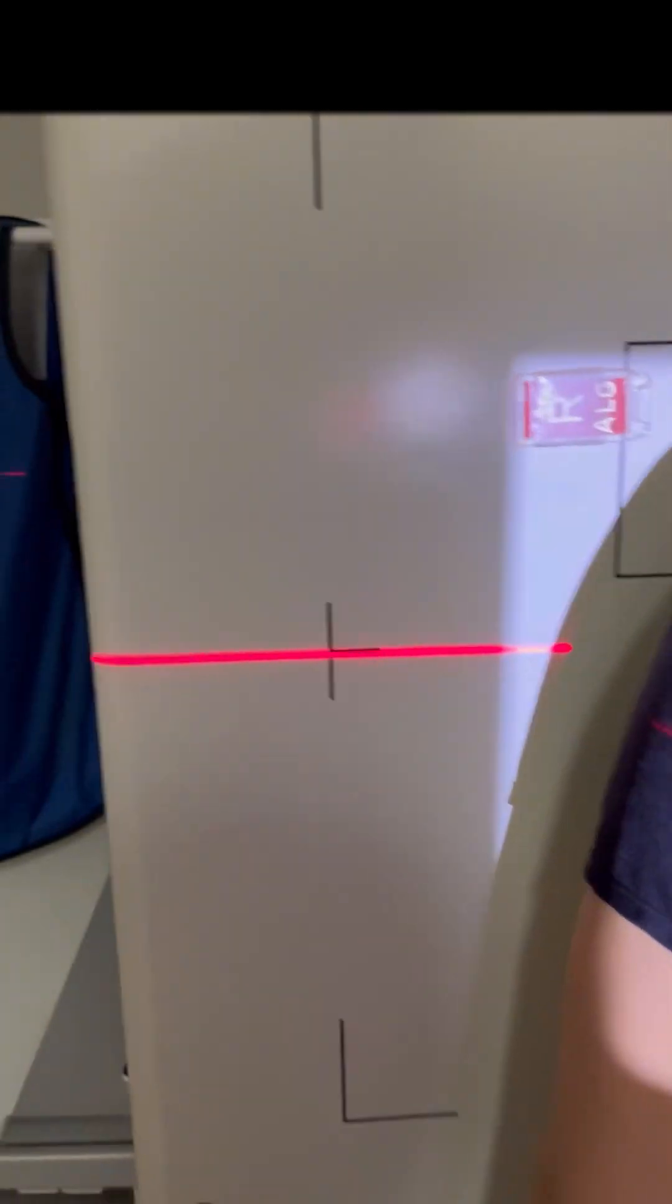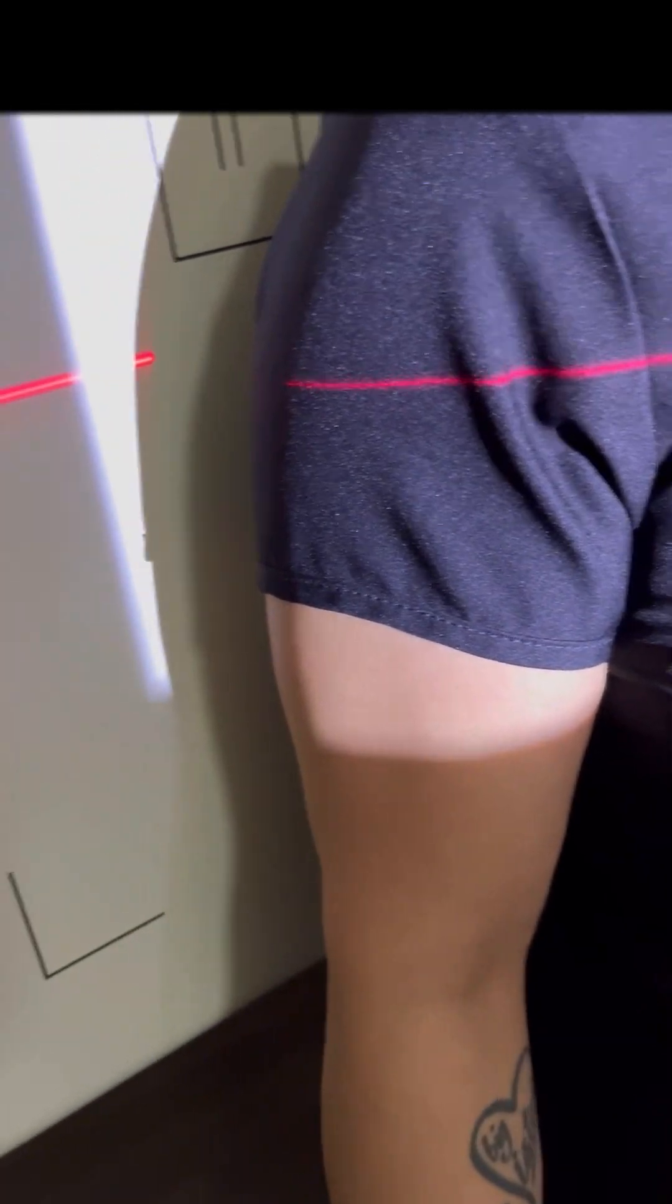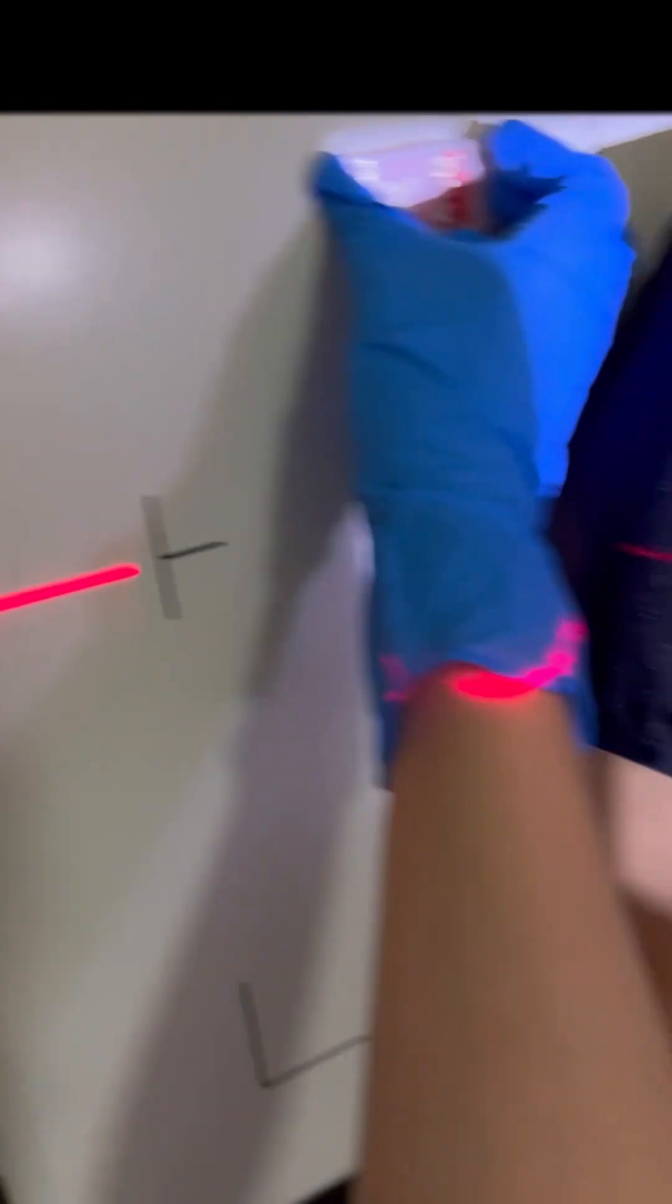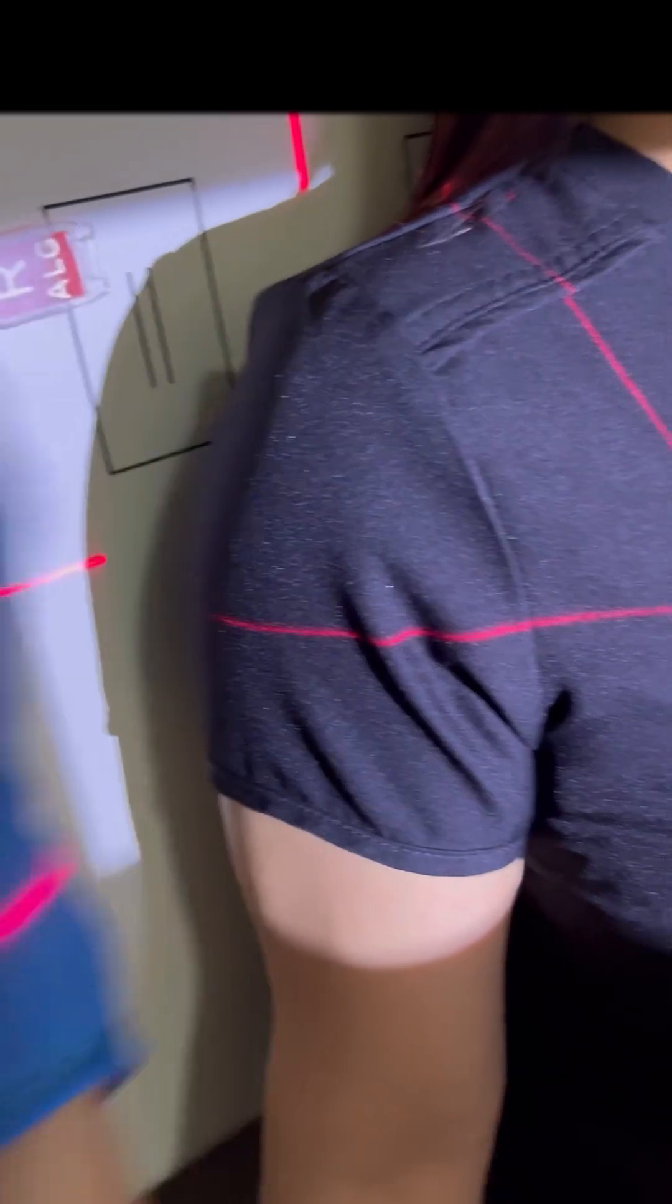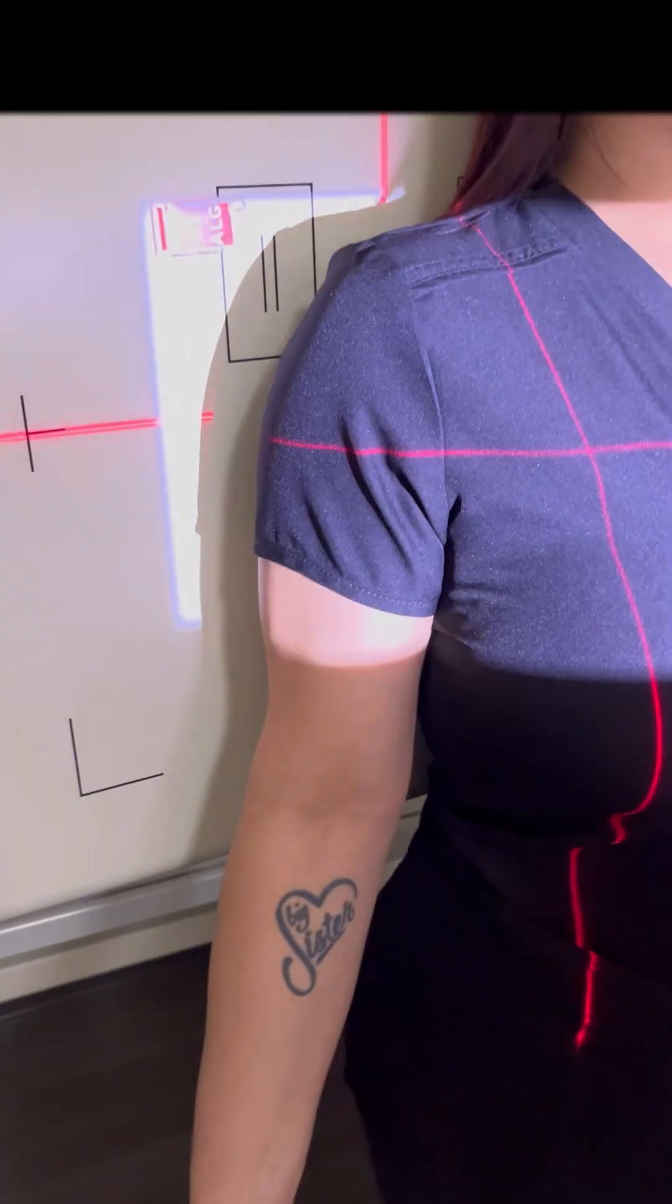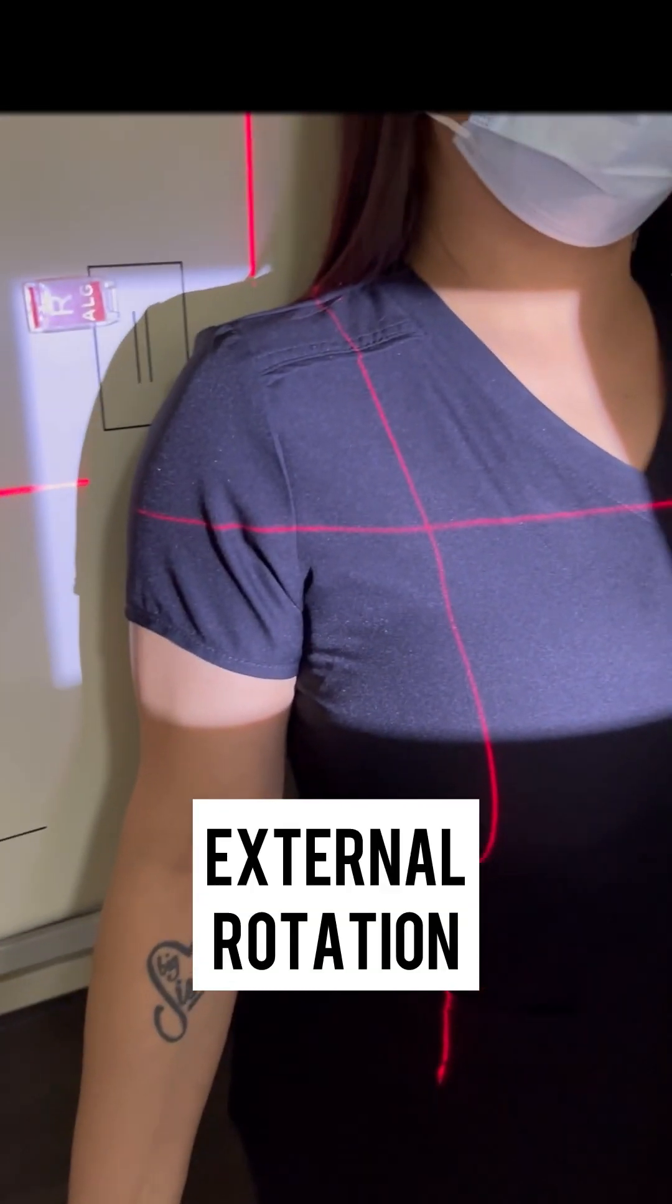For the external rotation, you're going to have your palm facing forward, and then you want to put your marker facing outward. That will be the external rotation.